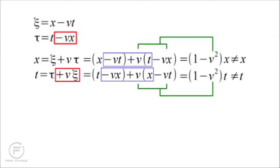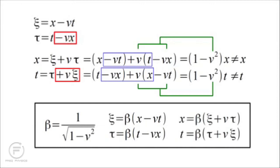So we now arrive at the final theory. We have a dilation factor beta equals 1 over the square root of 1 minus v squared, and we simply multiply our transformations by that dilation factor. If we do that, we end up with two factors of beta, or beta squared, which is 1 over 1 minus v squared — that cancels out the 1 minus v squared that was causing problems. The shrinkage is canceled out by the dilation. These are the final equations for the transformation between space and time in special relativity.